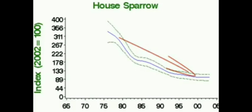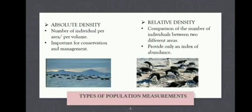By analyzing such data — for instance, relating it to the introduction of the house cat — we might establish the reasons behind a population's decline and develop a reasonable recovery plan. When collecting population measurements, there are two types: absolute density and relative density. Absolute density is the number of individuals per area or volume, and is important for conservation and management. Relative density is a comparison of the number of individuals between two different areas, providing only an index of abundance.